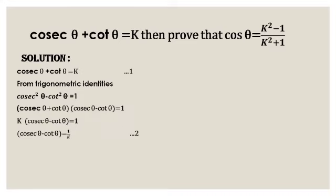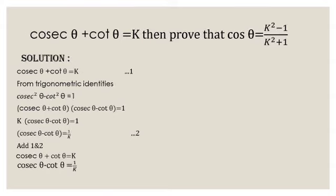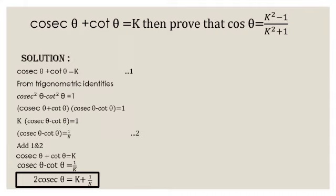Let's add equation 1 and equation 2. Cosecant theta plus cot theta plus cosecant theta minus cot theta is equal to k plus 1 by k. The cot theta terms cancel, giving 2 cosecant theta is equal to k plus 1 by k. This is equation 3.